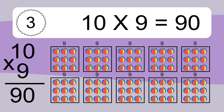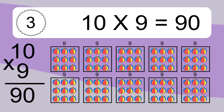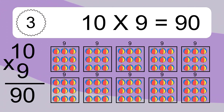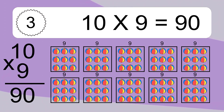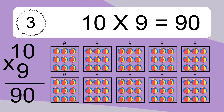We have 10 boxes, and each box has 9 colorful balls inside. If you count all the balls in all the boxes together, you will have 10 times 9 balls. This equals 90 balls.